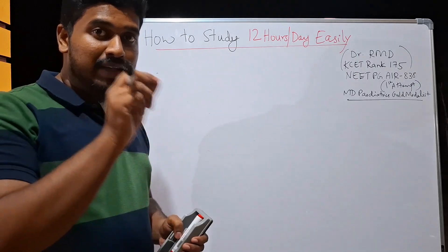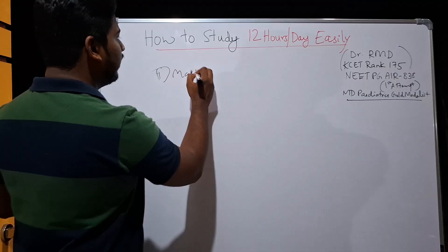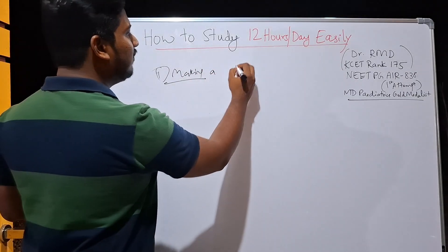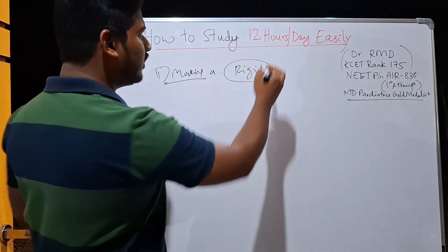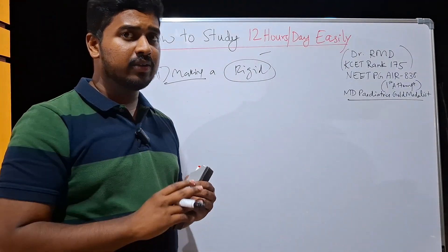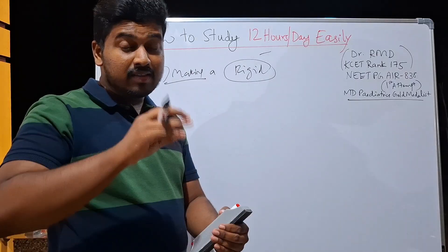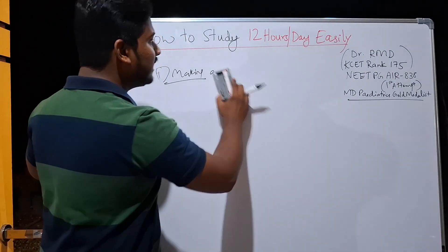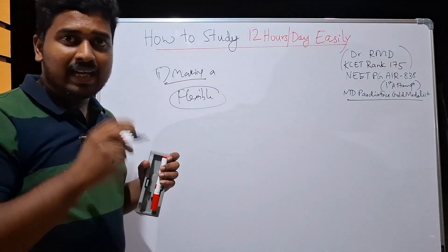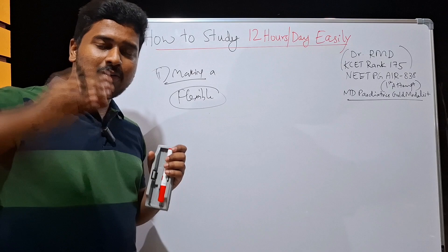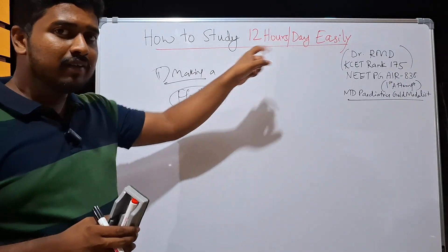First thing is making a schedule. Now, the problem with everyone for making a schedule is you make a very rigid schedule. What do you mean by rigid schedule? Let's say you want to study for 12 hours per day. How many hours of rest do you give? You may give hardly 1 or 2 hours of rest per day which is not at all enough. What does an ideal study schedule look like? It should be flexible. Unless it is flexible, unless you include rest in your schedule, you are not going to reach this target.